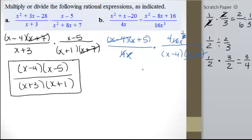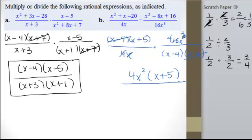So it looks like what we have will be a 4x squared in the numerator. Also, an x plus 5 in the numerator. And in the denominator, we're left with an x minus 4.